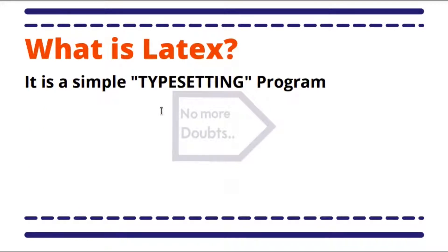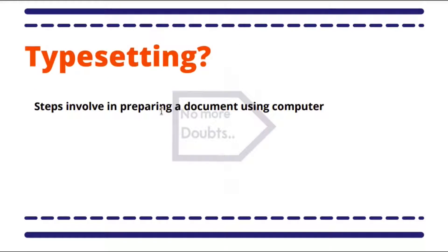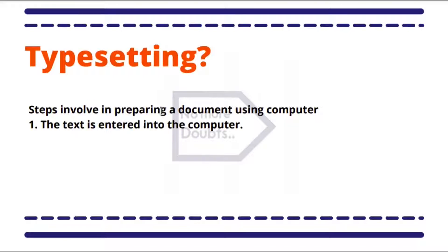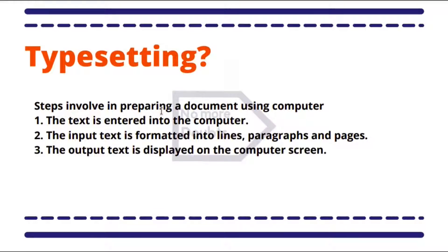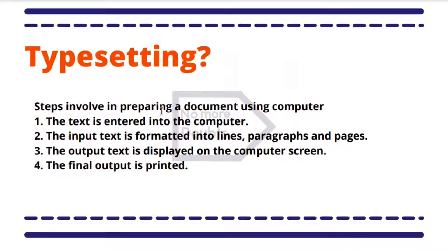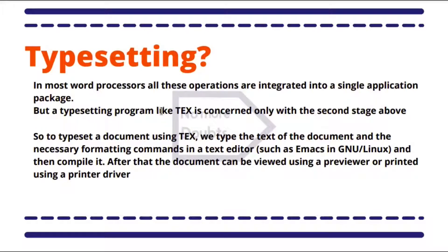Wait, what is typesetting? Generally to prepare a document using computer, it involves four steps mainly: one, the text is entered into the computer; the input text is formatted into lines, paragraphs, and pages; output text is displayed on the computer screen; and finally the final output is printed. In a word processor, all these operations are integrated into a single application package.